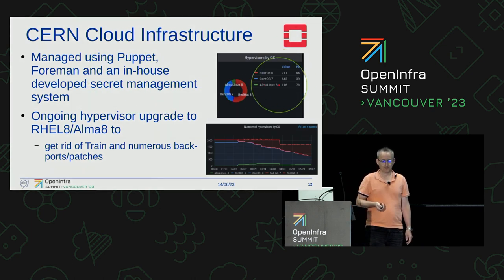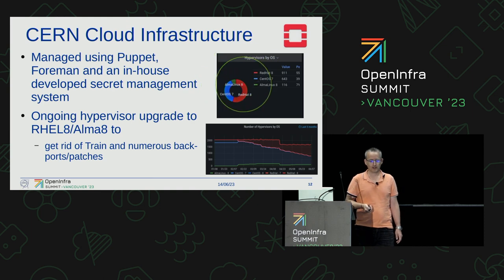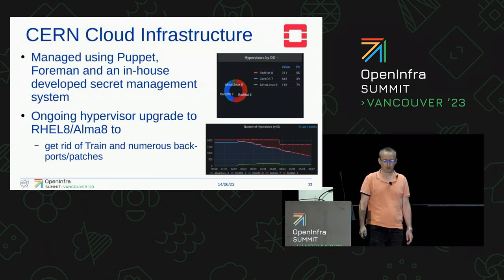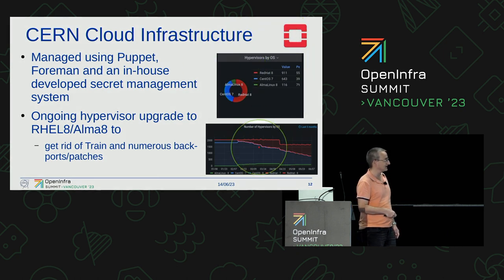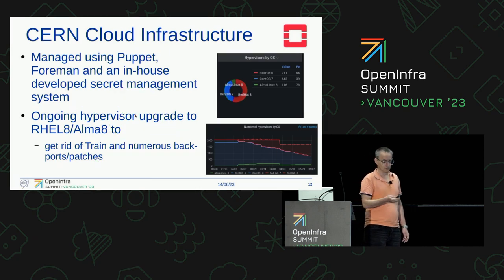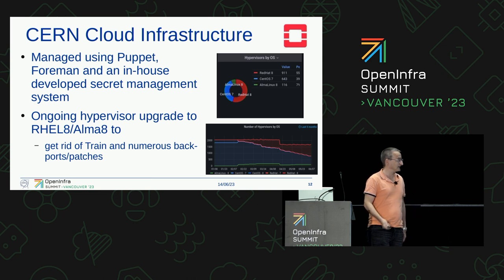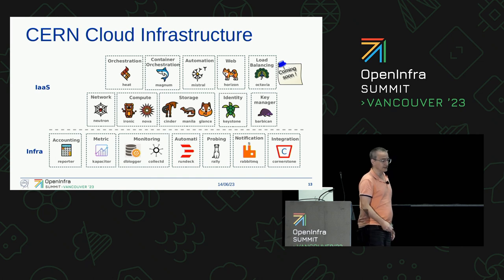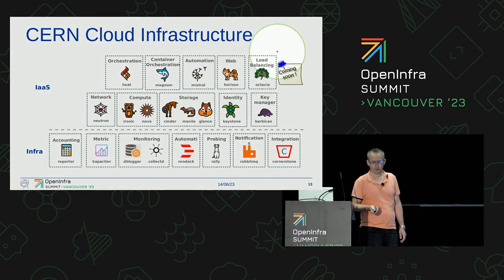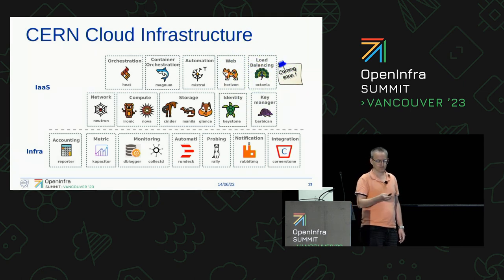The infrastructure is managed with Puppet and Foreman, and we have an in-house developed tool for secret management. Right now we are running a campaign to evacuate all the hypervisors and move them to Red Hat 8 or Alma Linux from CentOS 7, because we have to phase that out. The goal is to get rid of Train, the oldest release, and catch up with Nova to get it to newer versions, and in particular get rid of private patches and backports. There's one component worth mentioning: the addition of Octavia, which is coming soon for load balancing.